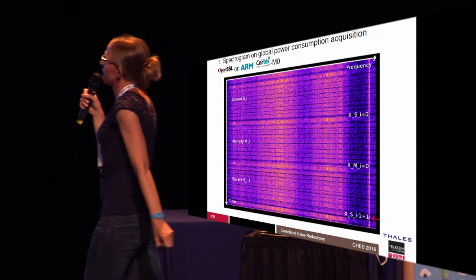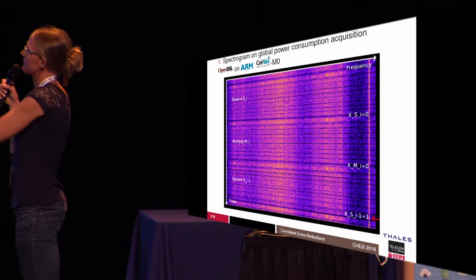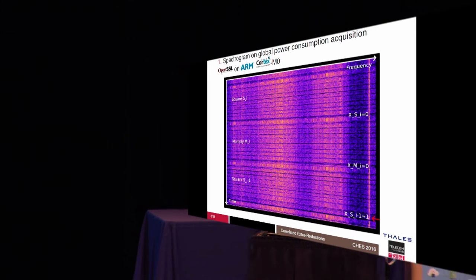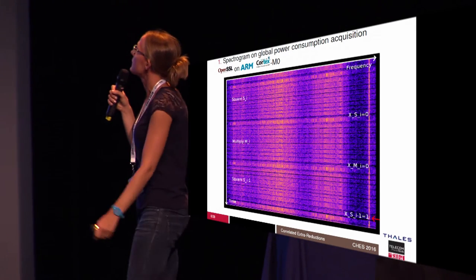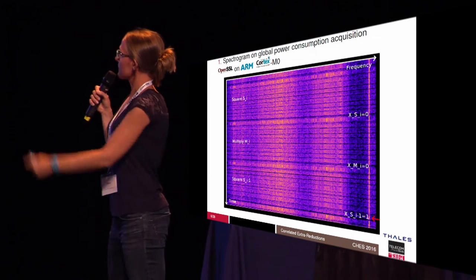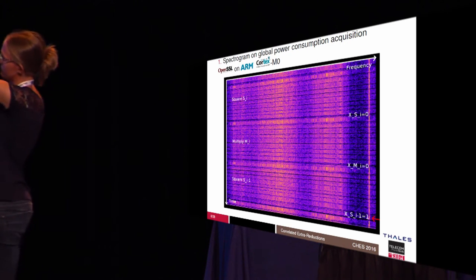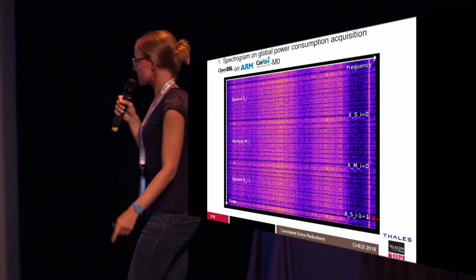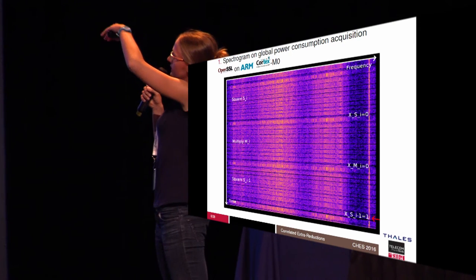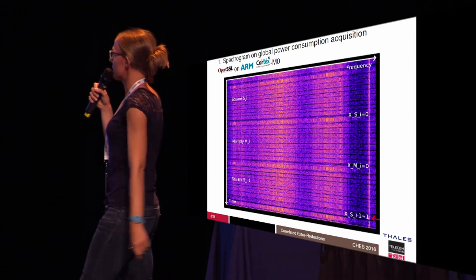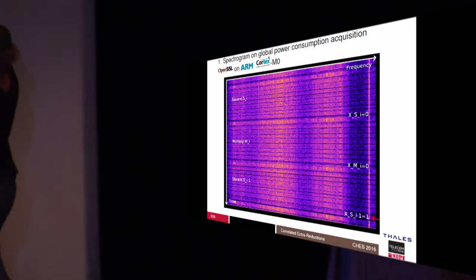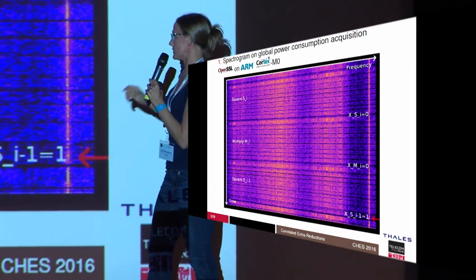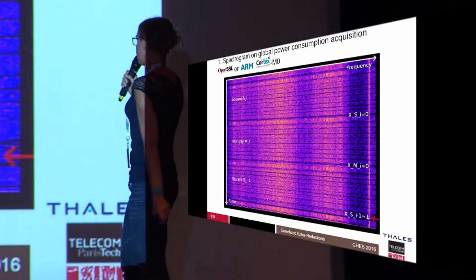For experiments in OpenSSL, we have an implementation on Cortex-M0. We compute the spectrogram of the power consumption traces. The spectrogram has time on the vertical axis and frequency on the x-axis. We have a square, a multiply, and another square. When there is no extra space in timing, we don't have a final reduction. But here we have more timing between the operations, indicating an extra reduction.